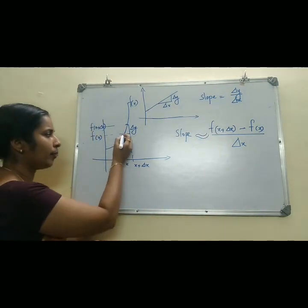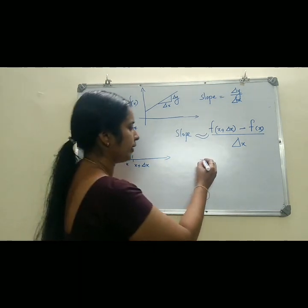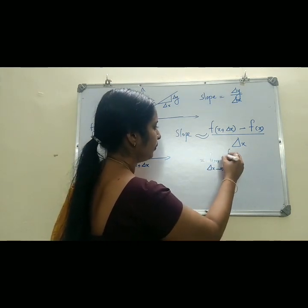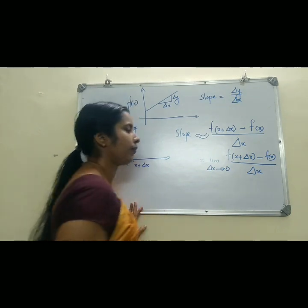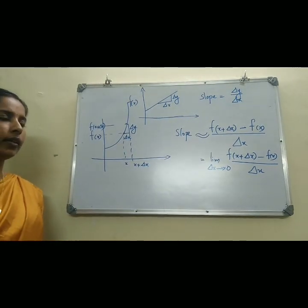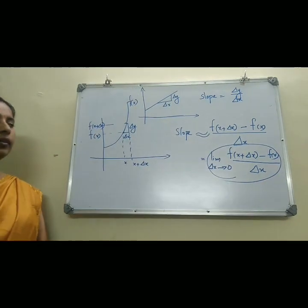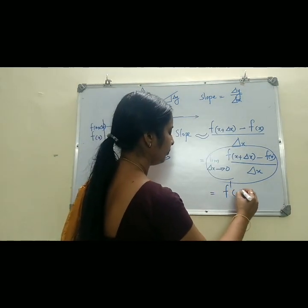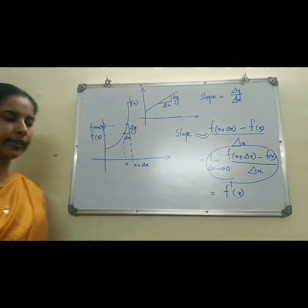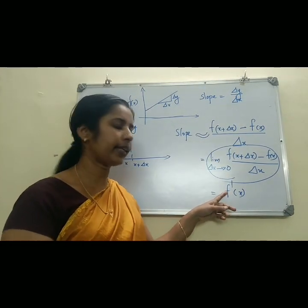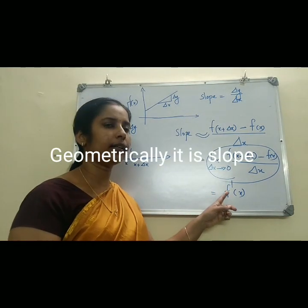For getting the exact slope at this point, we have to take delta x tending to 0. So the exact slope is the limit as delta x tends to 0 of f(x + delta x) minus f(x), divided by delta x. I think you are familiar with this limit — it is nothing but f'(x). So slope at point x is f'(x). That is, the derivative of f(x) at the point x is the slope. We can conclude geometrically: the derivative is the slope of the curve at a point.